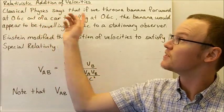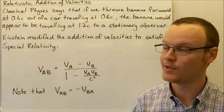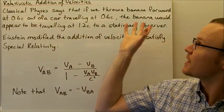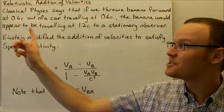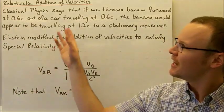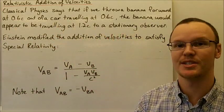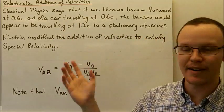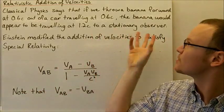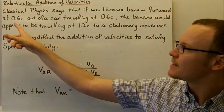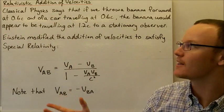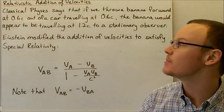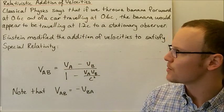Today we're going to be looking at the relativistic addition of velocities. Classical physics says that if we have a banana and we throw it forward at 0.6 times the speed of light out of a car travelling at 0.6 times the speed of light, then the banana would appear to be travelling at 1.2 times the speed of light to a stationary observer. So that's adding the two velocities together — the cumulative velocity would appear to be faster than the speed of light, which isn't possible.